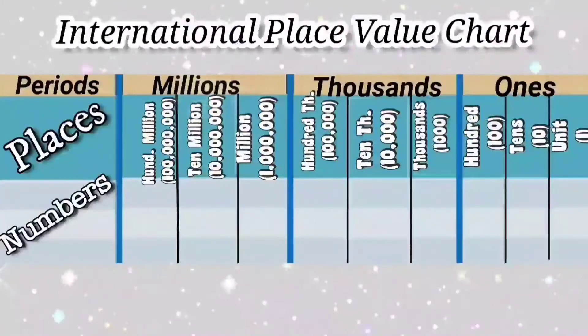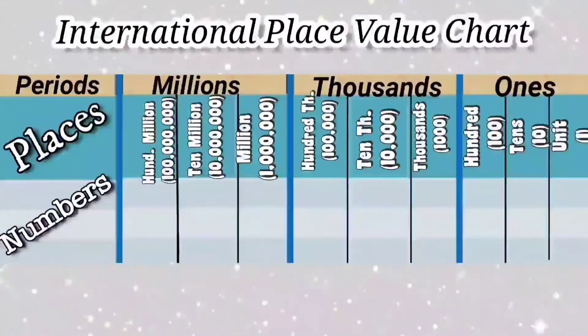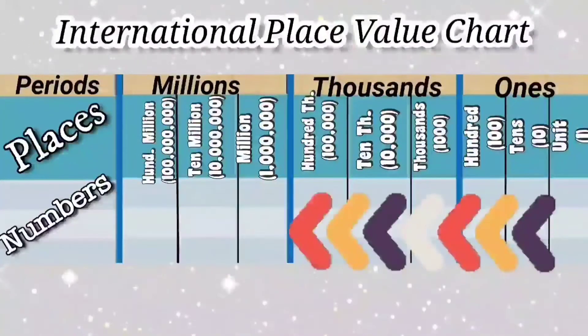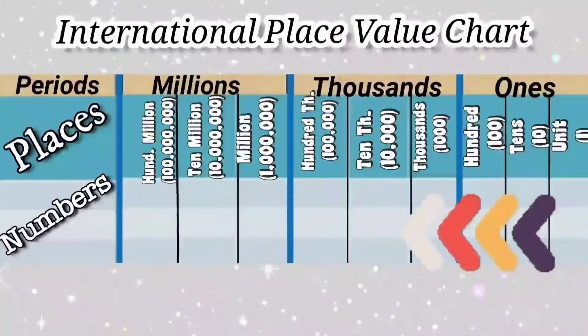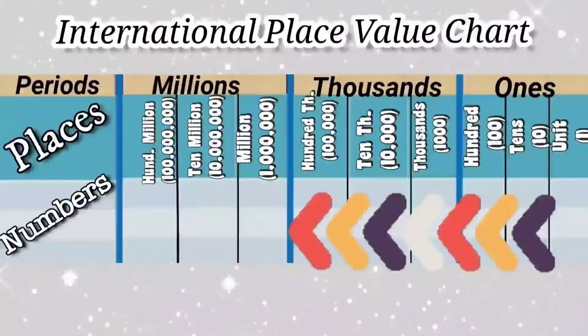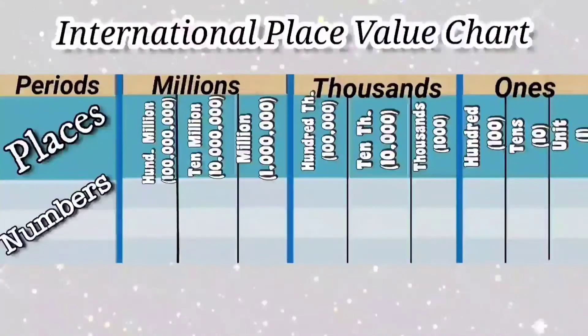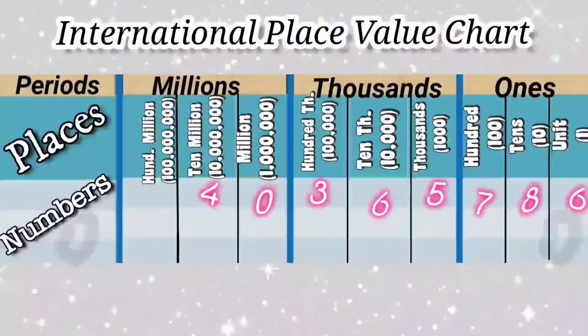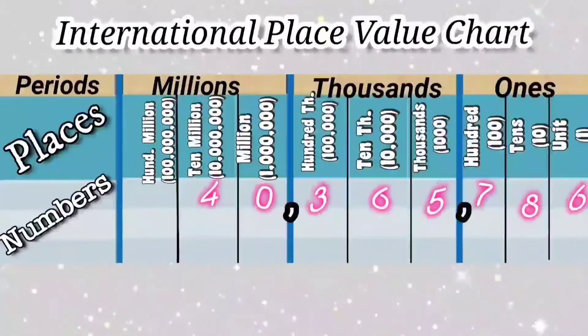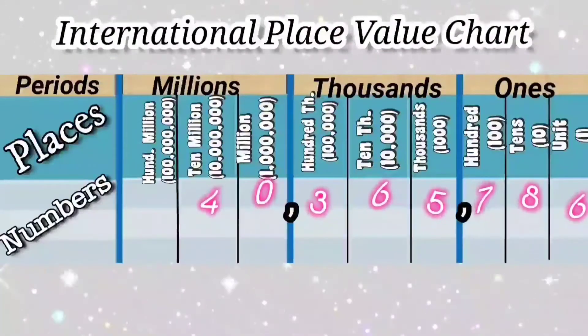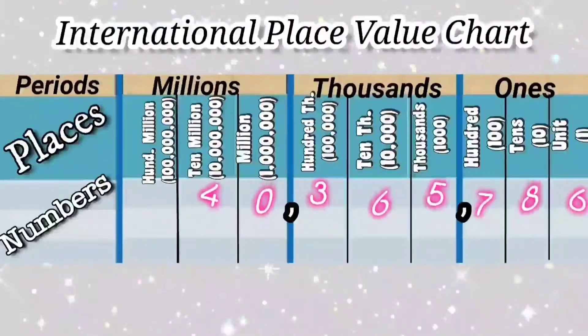Place value of a digit increases by 10 times as it moves place by place from right to left. We write the numbers in standard form using commas and read numbers from left to right using the period.